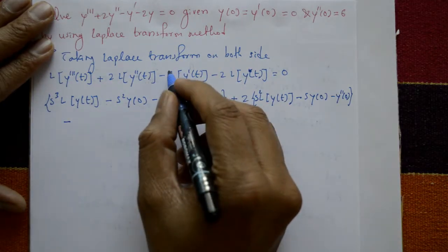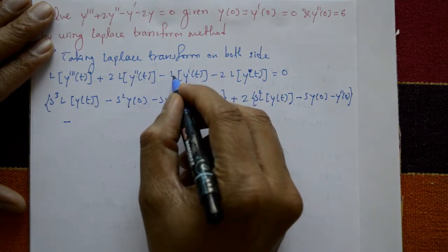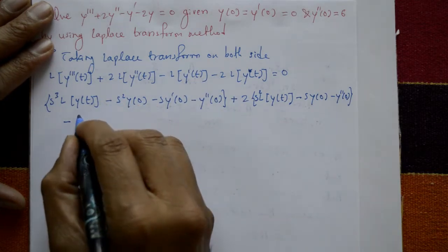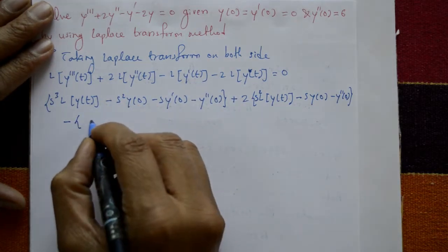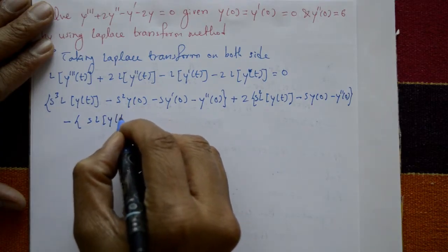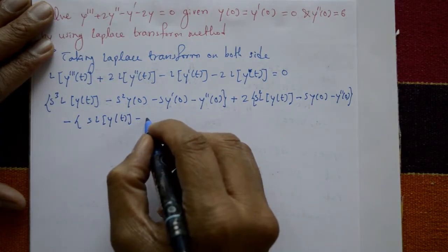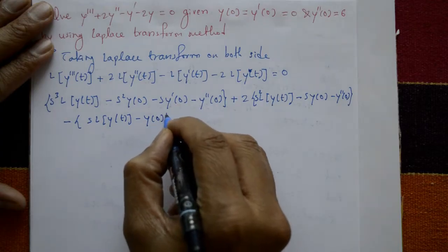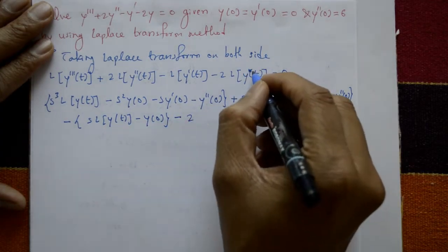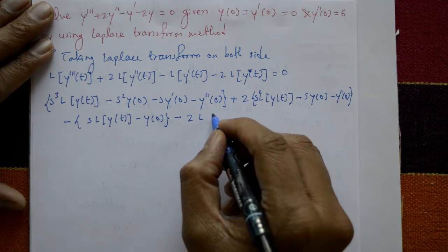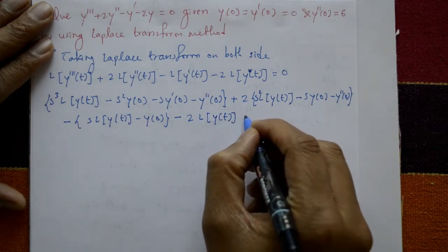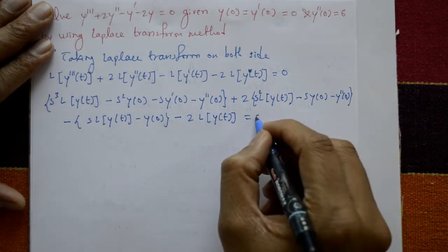The third term: minus L{y'(t)}, which expands as s·L{y(t)} - y(0). The fourth term is minus 2·L{y(t)}, and the right-hand side equals 0.